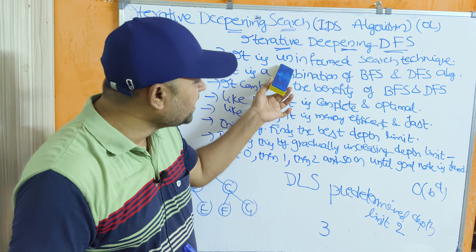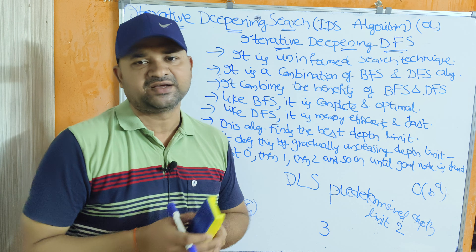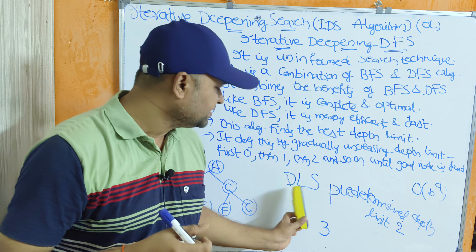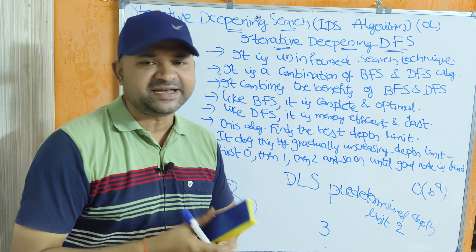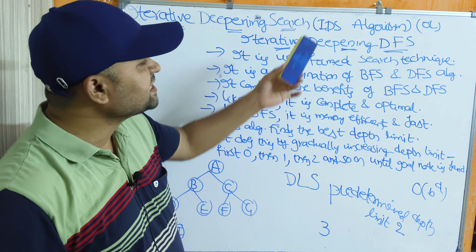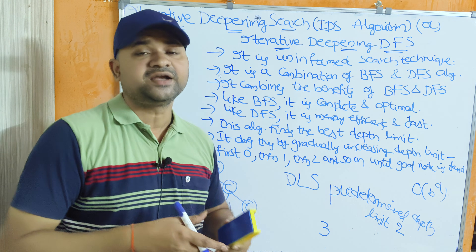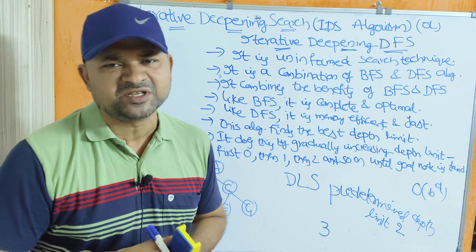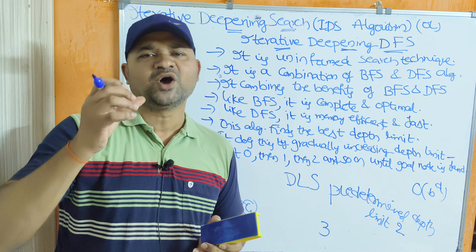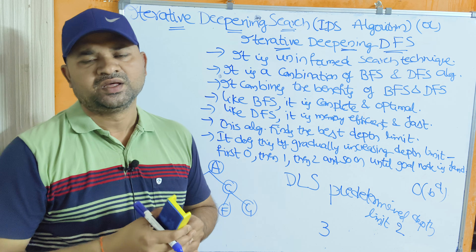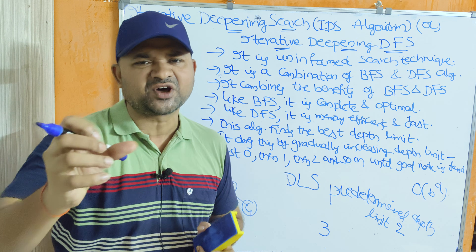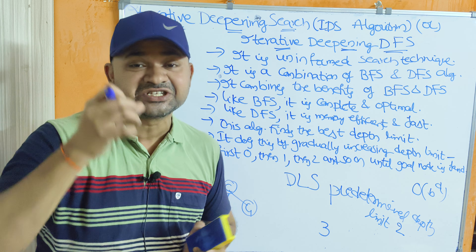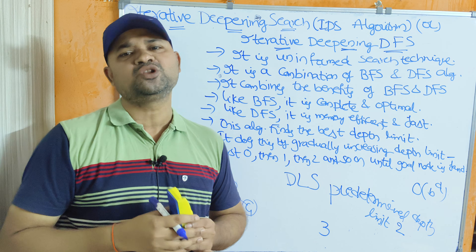IDS is an uninformed search technique, just like breadth-first search, depth-first search, and depth-limited search. In uninformed search, domain knowledge is not needed and heuristic functions are not needed — it doesn't use any additional information about the goal state.